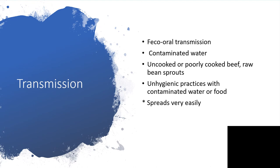Transmission is via water, like other causes of diarrhea — contaminated water contaminated with feces. It could be found in uncooked or poorly cooked beef, raw bean sprouts, and any unhygienic practices with contaminated water or food. It spreads very easily and very widely.